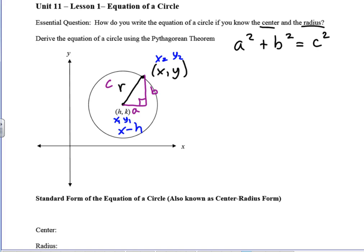What would the change in b? How do we do that? y2 minus y1. What's y2? y minus y1 is k. Alright, so now we're going to substitute those things into our a squared plus b squared equals c squared. So a squared is x minus h. So we have x minus h quantity squared plus b, which is y minus k quantity squared equals c, which is the radius, which will be r squared.